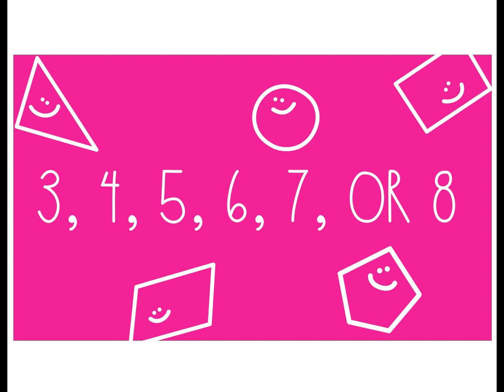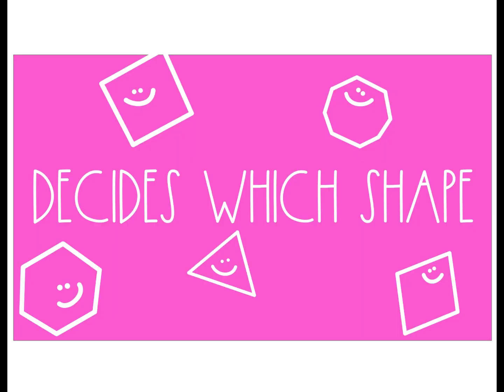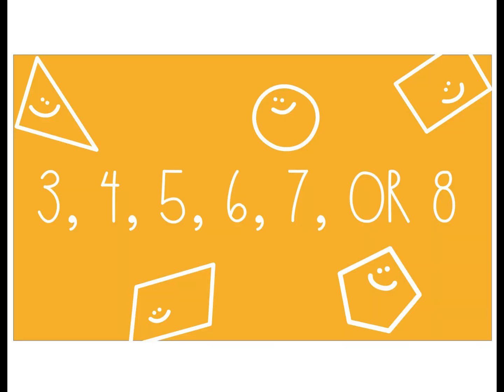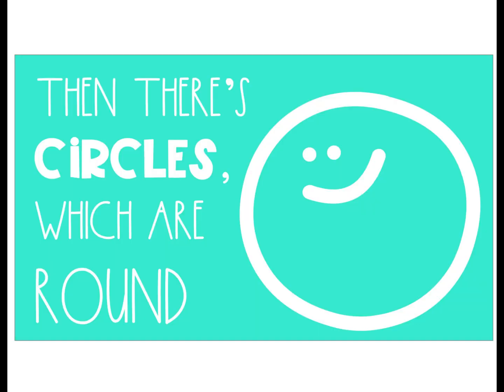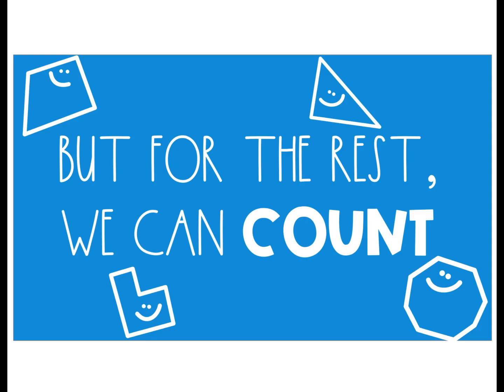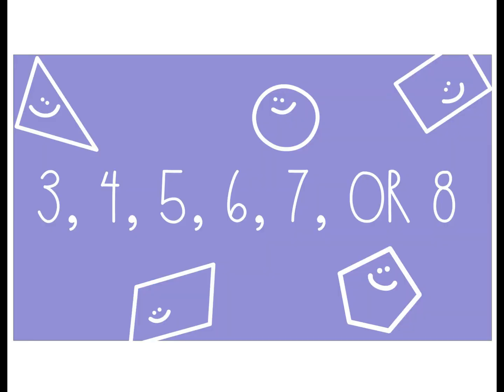3, 4, 5, 6, 7, or 8 decides which shape. Then there's circles which are round, but for the rest, we can't count: 3, 4, 5, 6, 7, or 8.